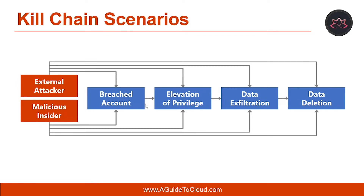Most attacks follow a common process, referred to within the security industry as the kill chain. An attack follows a basic pattern and proceeds from one step to the next in order to achieve the desired outcomes. This step-wise process can be defended against by implementing security measures on choke points in the chain.